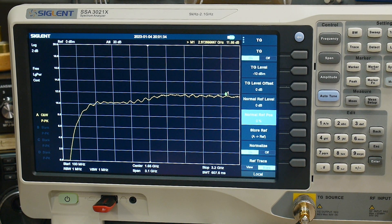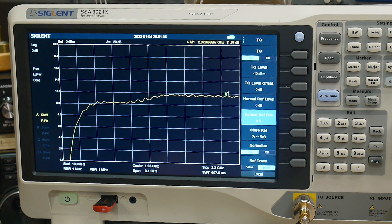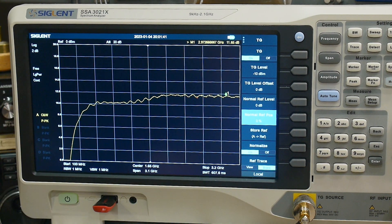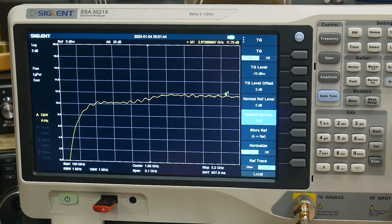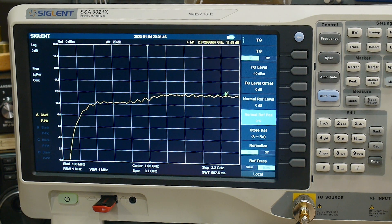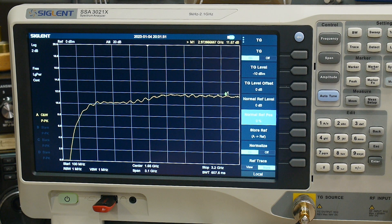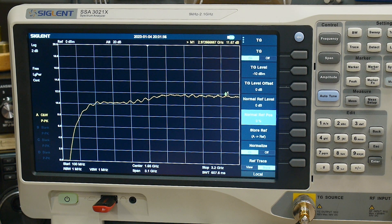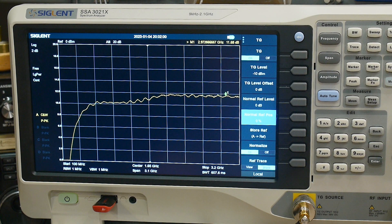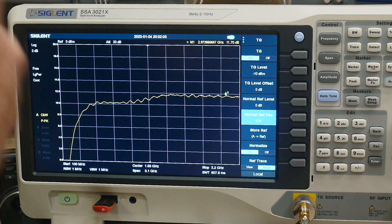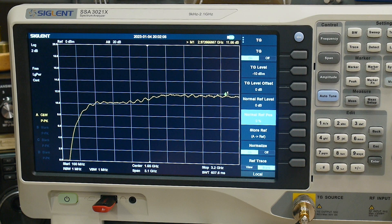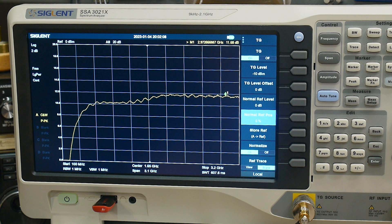Some people may say you should measure that on a VNA. That could be true. I think the very most accurate way to make this measurement is on something called a scalar network analyzer. A scalar network analyzer uses true power sensors and it is quite accurate. They are big beasts, hard to set up, very expensive because you have to have multiple detectors which are a thousand dollars each.